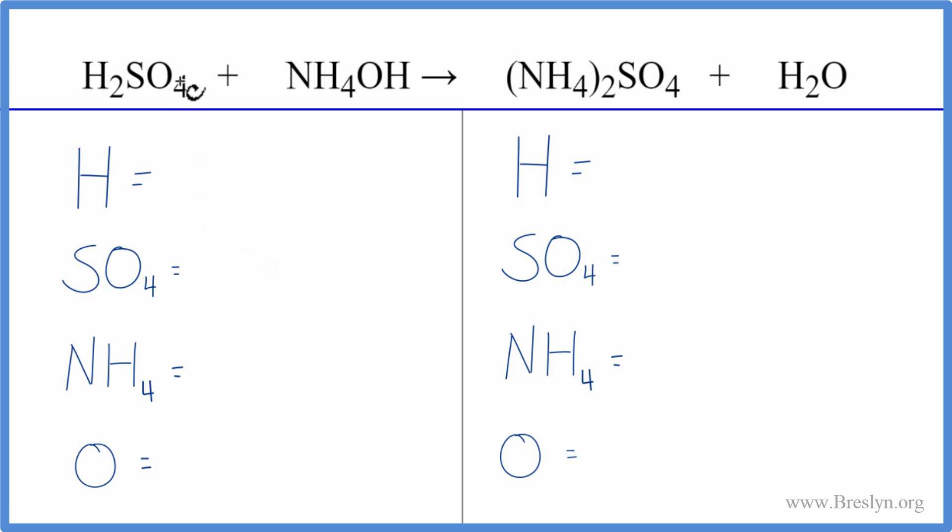What we'll do is, since we have a sulfate ion here and one here, we're going to count the sulfate ion as just one item. And then for the NH4, the ammonium ion, we have one here, and then we have the one here. We're just going to call NH4 one thing. That'll make the balancing a whole lot easier.